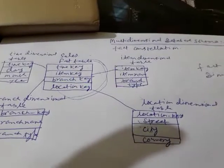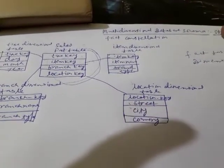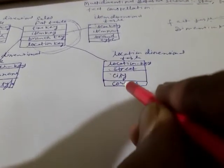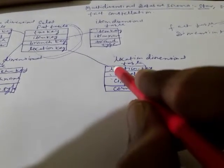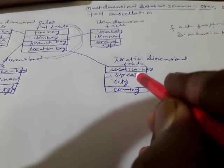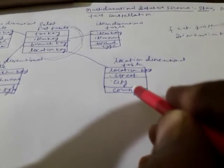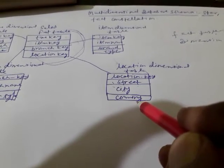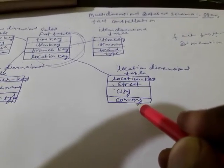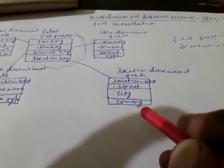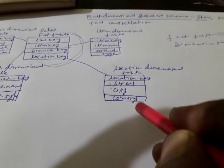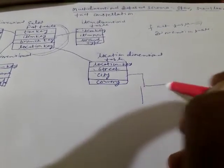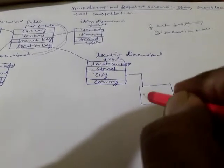Now, what is the snowflake schema? In the snowflake, if we have location information with location key, street, city, and country, and someone wants to search further detail — for example, within a city like Kolkata, the street, building number, and apartment — then we can divide the city into a further table, with a city key containing street, building number, and pin code.